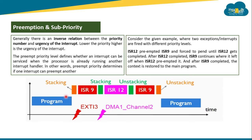In this diagram, the main program was executing when ISR 9 triggered, jumping to the interrupt service routine for external interrupt line 3. During that execution, another interrupt for DMA 1 channel 2 — ISR 12 — fires with higher preemption priority. ISR 9 stops, ISR 12 executes, and once ISR 12 completes, ISR 9 resumes where it left off. After ISR 9 finishes, the context is restored to the main program.